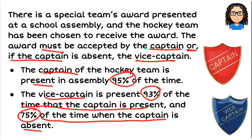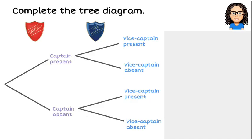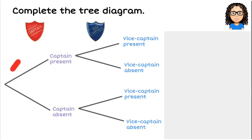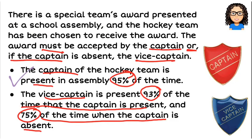We've first of all been told that the captain is present 95% of the time. So the captain being present — that's this branch here — is 0.95. And if he's present 95% of the time, then there's 5% of the time, or 0.05, that the captain is absent.